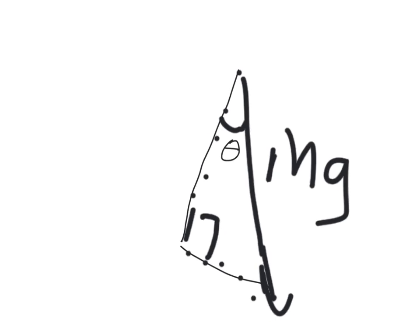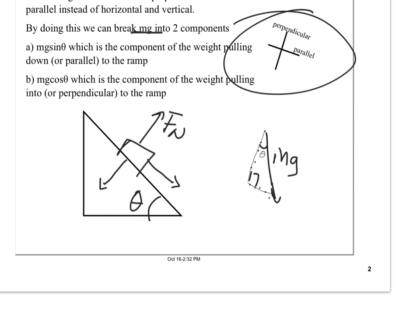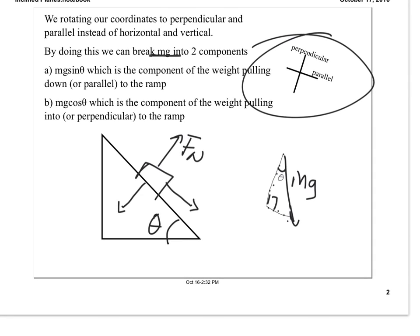So I can do some trigonometry and determine what these two components, this guy and this guy, I can determine what those values are. So I won't bore you with the details. It's not super important. But mg sine of theta, so mass times gravity, times the sine of the angle, and that's the angle of the ramp, same angle, is the part of the weight that pulls down the ramp or pulls parallel to the ramp. And mg cosine of theta is the portion that points into the ramp, that holds that box against the ramp as it slides down.